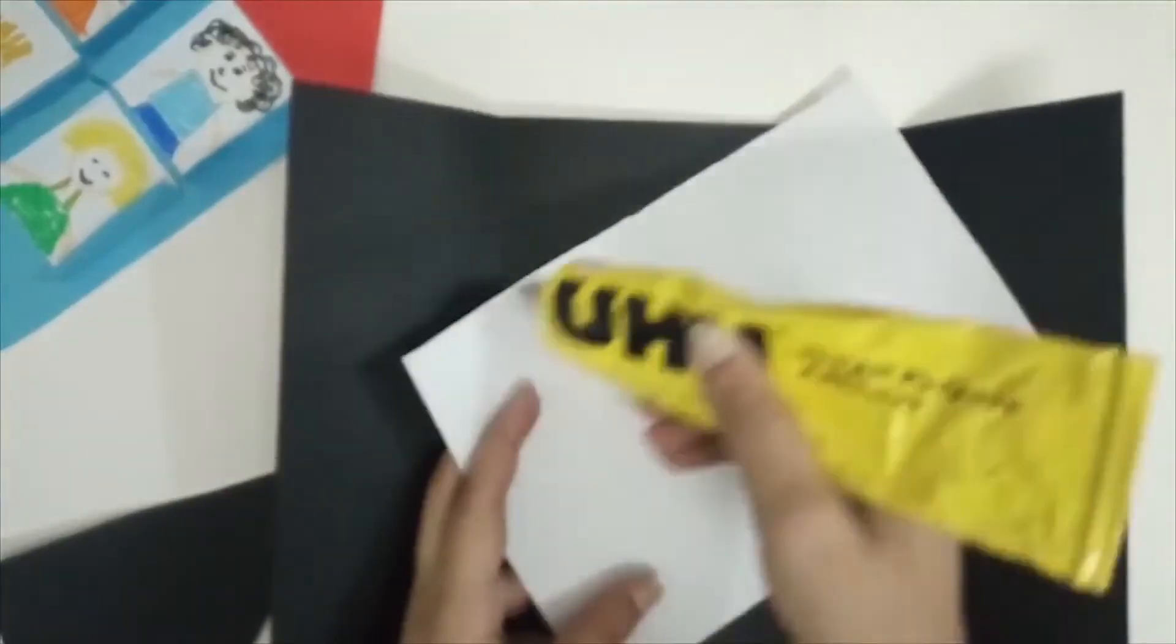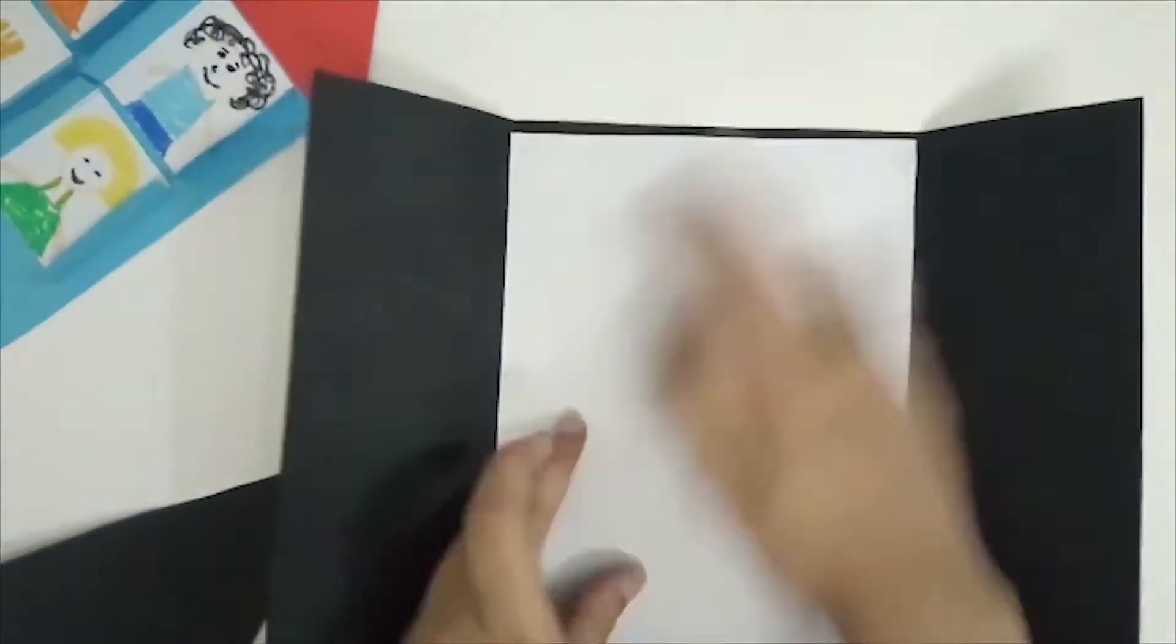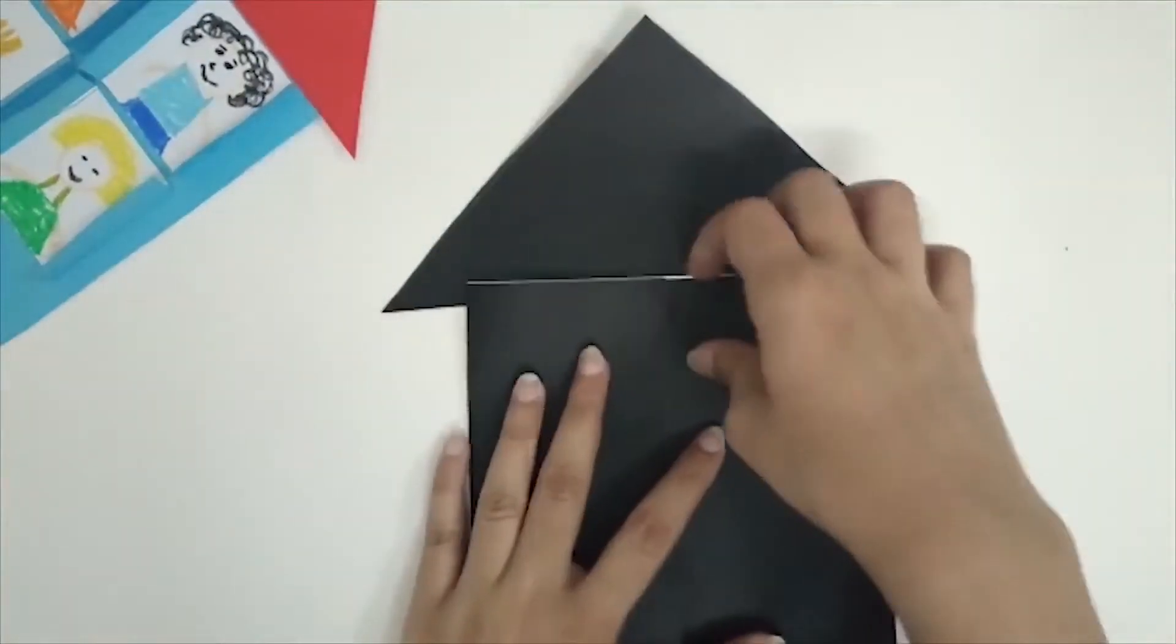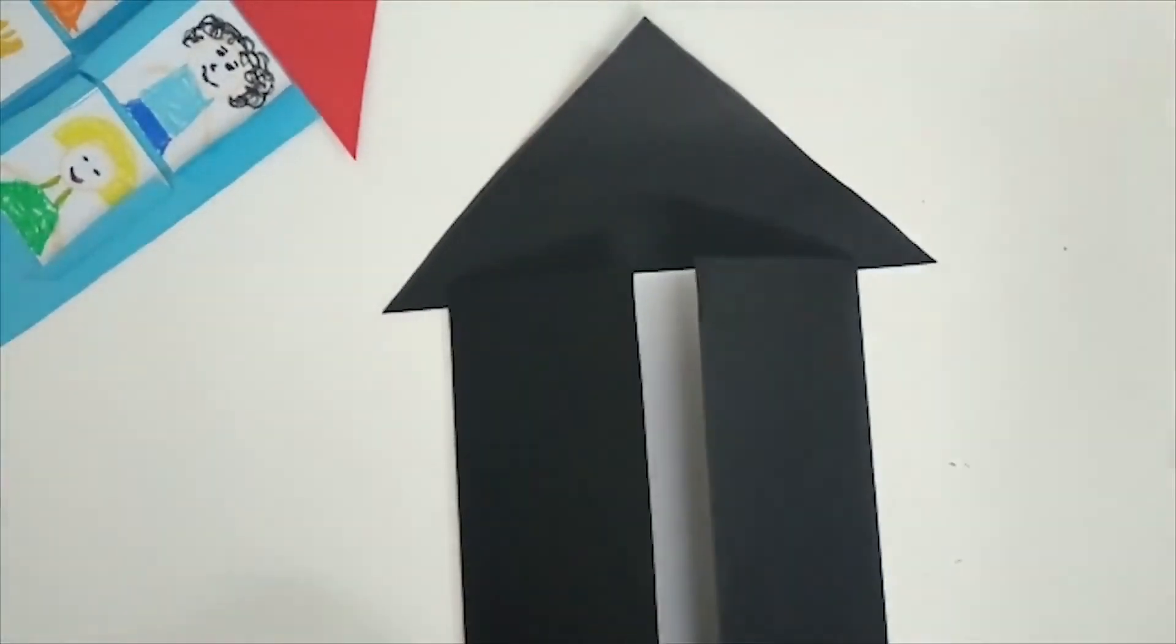For another kind of My Family activity, take black A4 paper, put it horizontally, and fold it by the sides as shown. Take a white paper and cut it from its center and paste it on the black paper. Cut a triangle of any colored paper and paste it at the top of the black paper.